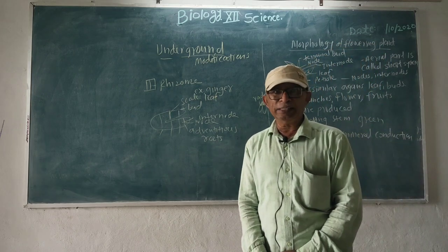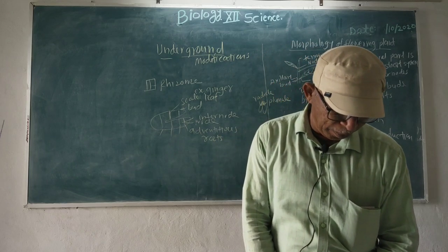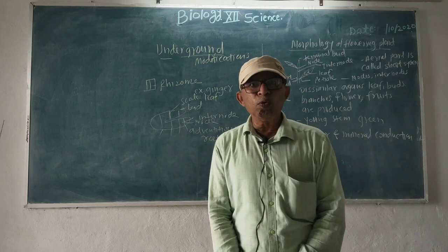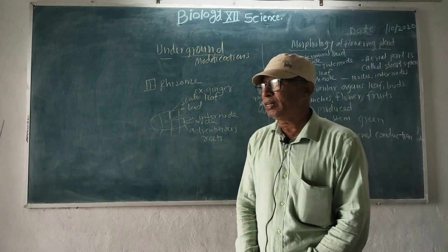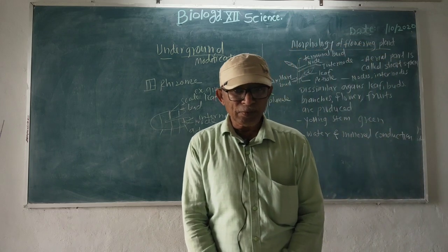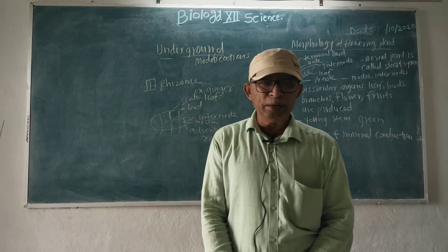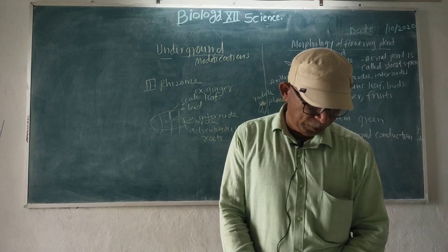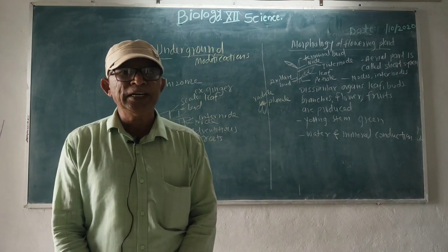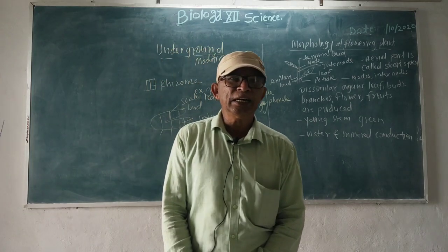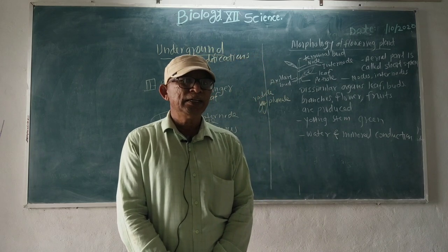An example of underground stem is the rhizome. Examples include ginger (Zingiber officinale) and turmeric (Curcuma domestica). Scale leaves are also produced from the nodes. Sometimes obliquely situated rhizomes are also present — for example in lotus (Nelumbo nucifera) and fern (Nephrolepis exaltata). You can write the notes and study. Thank you.